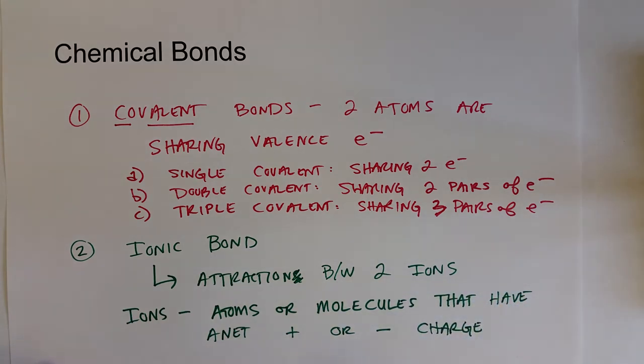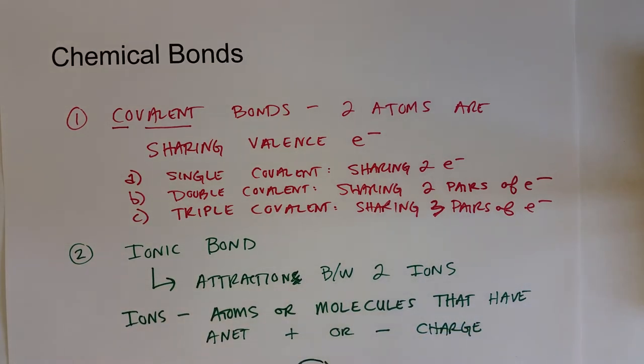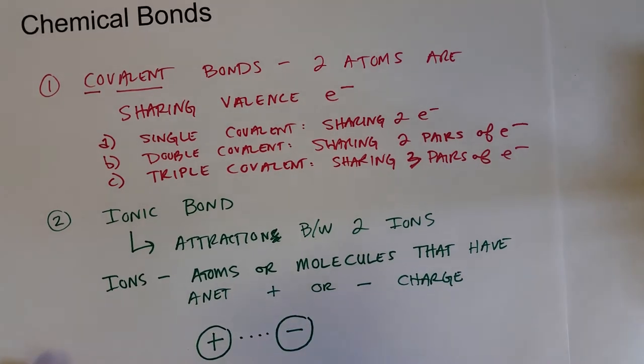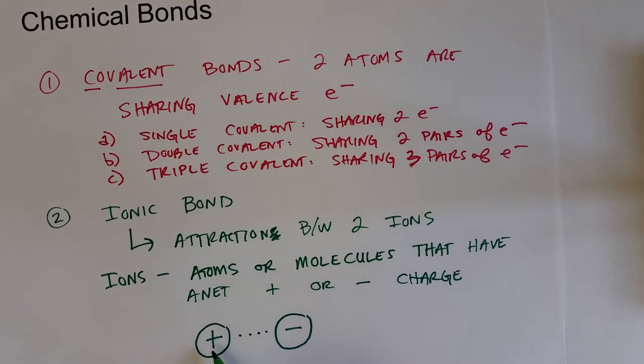So in an ionic bond, we have a positively charged ion that is electrostatically attracted to a negatively charged ion. And that electrostatic attraction between the positively charged ion and the negatively charged ion is the ionic bond.